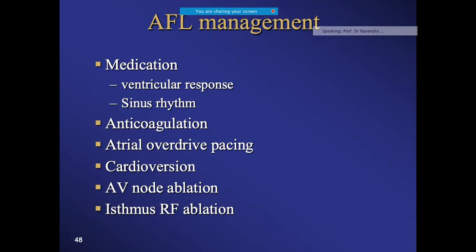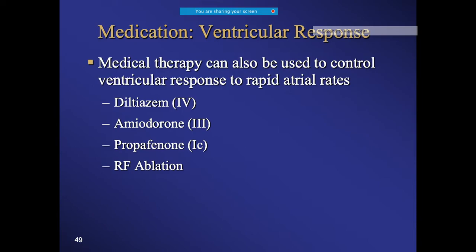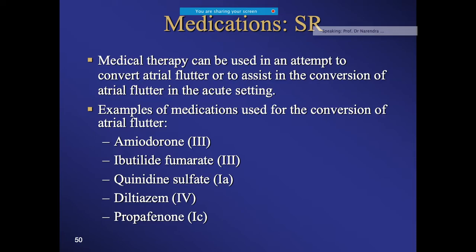For treatment, medical therapies include diltiazem, amiodarone, and propafenone. The best long-term option is catheter ablation. Medications can attempt cardioversion; if the patient is hemodynamically compromised, electrical cardioversion should not be avoided. Importantly, the thromboembolic risk in atrial flutter is well defined, and anticoagulation should be given.